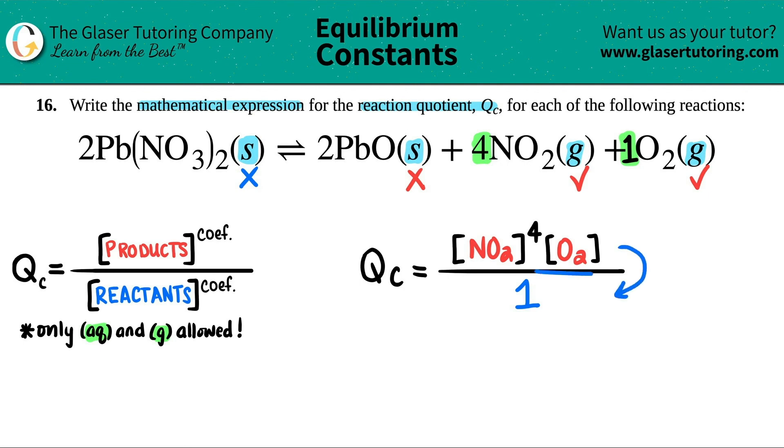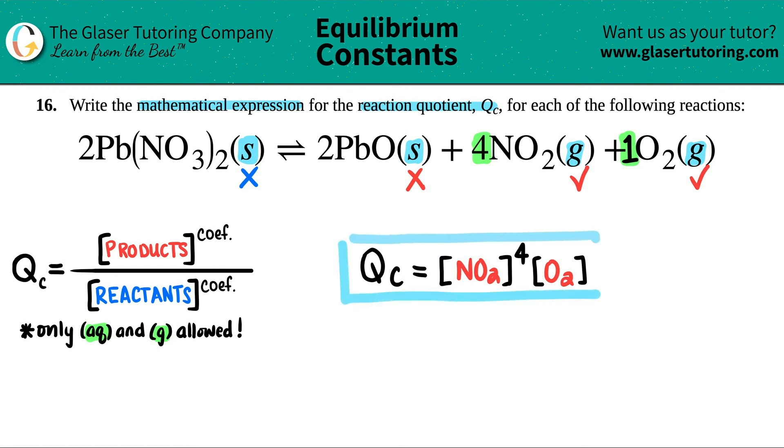And remember, anything divided by one is itself, right? So I can get rid of this one. I can get rid of the division sign. And now the QC is just basically the numerator. So it would be the concentration of NO2 raised to the fourth times the concentration of O2.